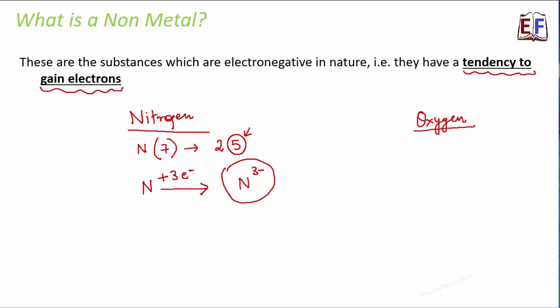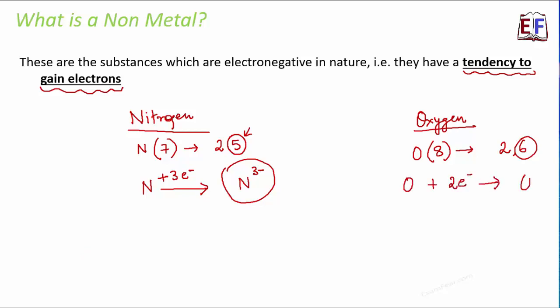Let's take another example — oxygen. Oxygen has an atomic number of 8, so its electronic configuration is 2, 6. With six electrons in the outermost shell, oxygen will take two electrons to become stable and forms O²⁻. So oxygen again is electronegative in nature.